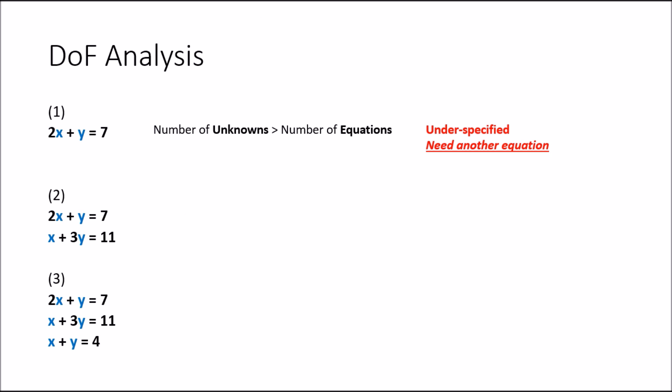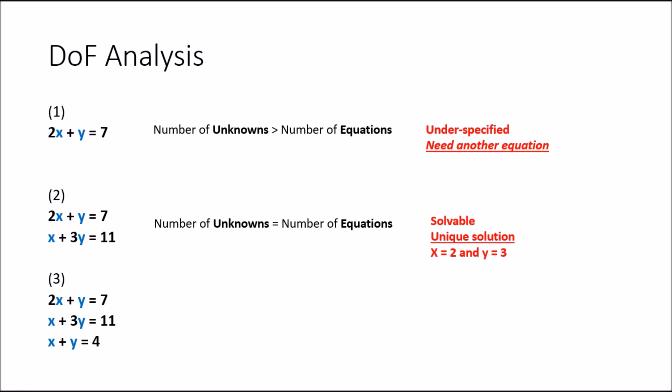That is not the case in our second scenario, where we have two unknowns x and y again, and two equations. In this case the number of unknowns is equal to the number of equations, and this is generally the scenario that we are looking to achieve when analyzing engineering problems. When the number of unknowns equals the number of equations, we have zero degrees of freedom and we can solve the system of equations. Solving the problem in this case gives us x equals 2 and y equals 3.